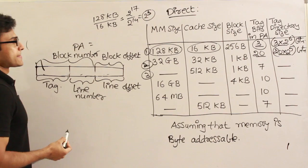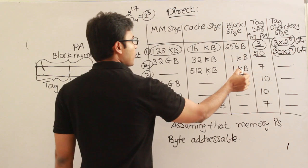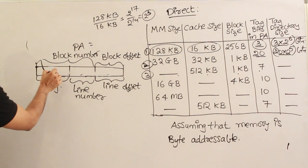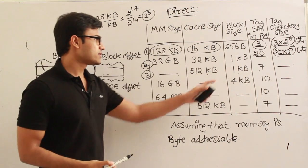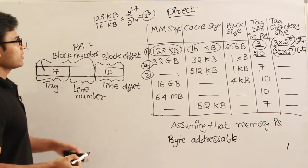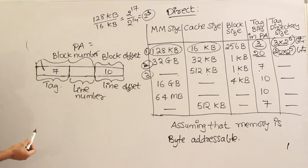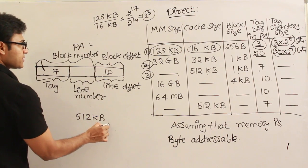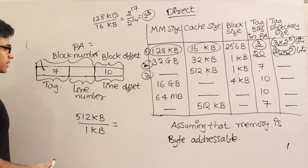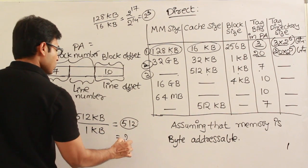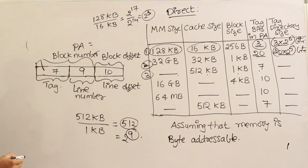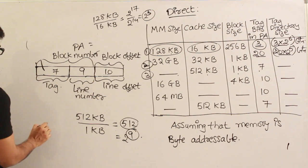Third question: the block size and tag size are given — tag is 7 bits, so block offset is 10 bits. Cache size is 512 KB and block size is 1 KB, so there are 512 blocks which is 2^9. That means 9 bits for the line number. Together: 7 + 9 + 10 = 26 bits total for the physical address.